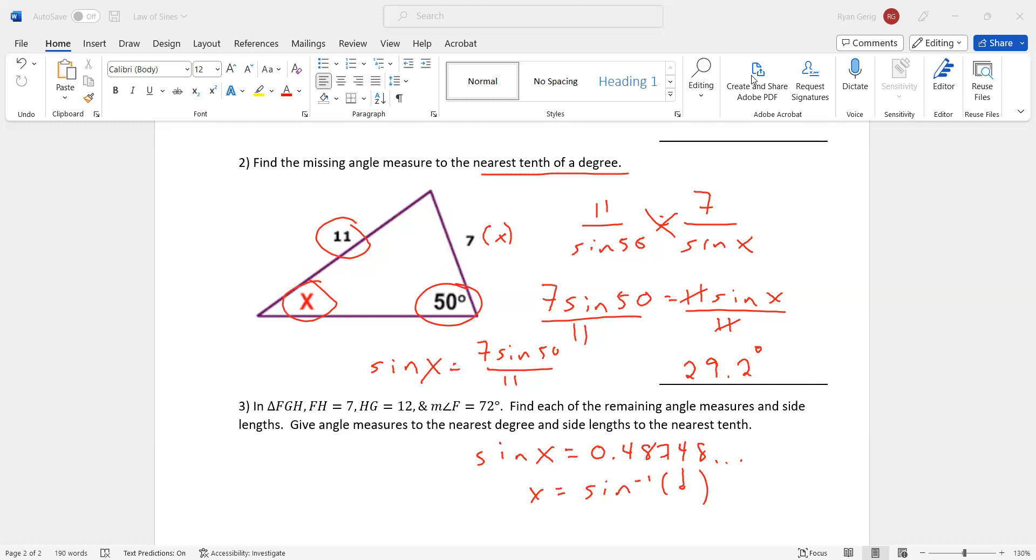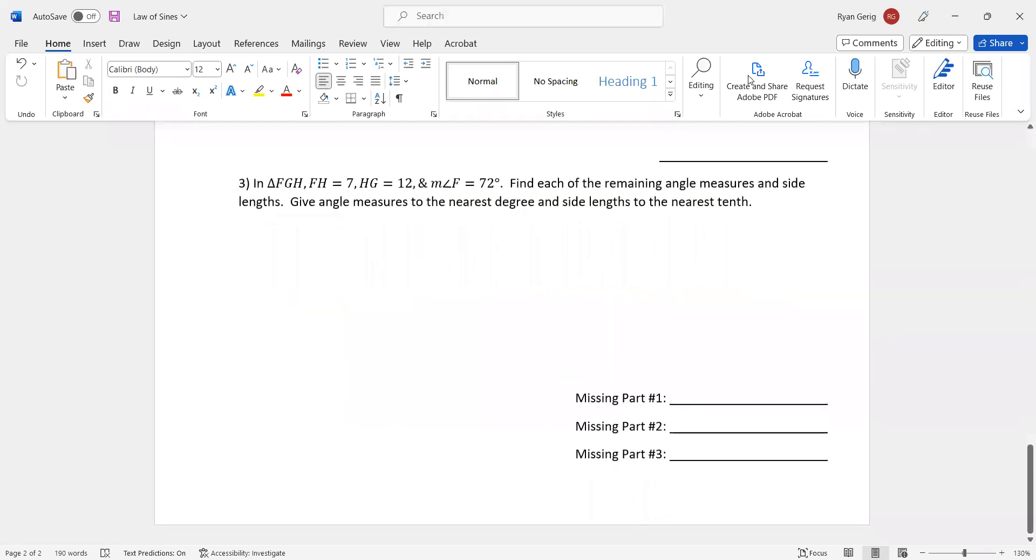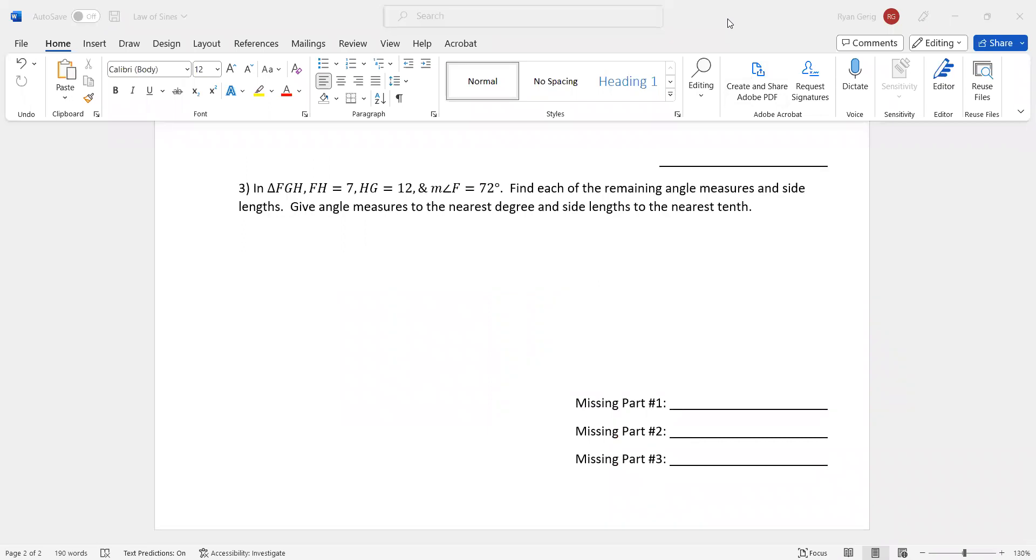Again, that one with the calculator can be a little tricky. You might want to put a little star by that if you had trouble with it. Last one. No triangle here, but I gave you the information that you need to draw a triangle. In triangle FGH, notice I don't even care if it's to scale. I'm just going to draw a triangle. FH, which is side FH, is 7. HG is 12. And angle F is 72. Now, if I asked you to solve for FG, you might get stuck because you wouldn't have enough information. You don't have FG or you don't have angle H.